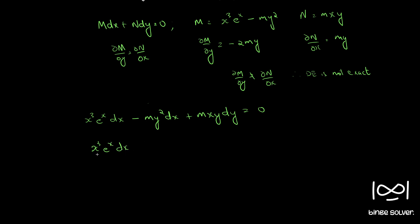Take x cube e raised to x separately. Taking minus m y common from the other terms, we have y dx minus x dy equal to 0.